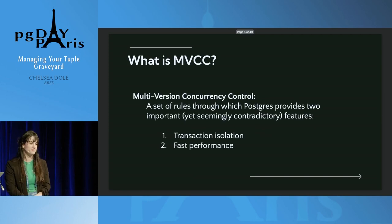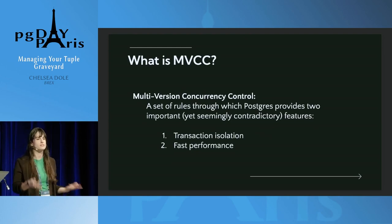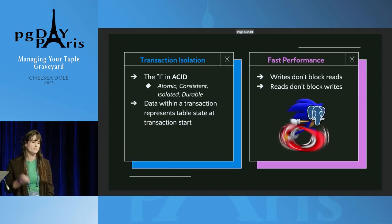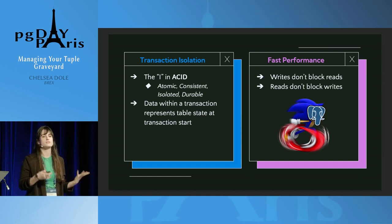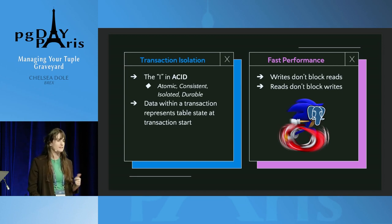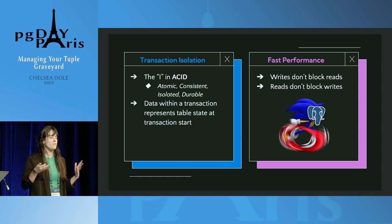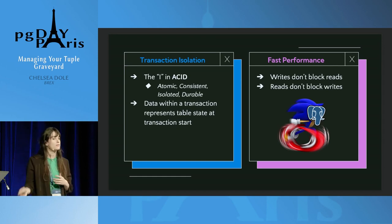Multi-version concurrency control, or MVCC, is basically a set of rules that Postgres uses to provide two seemingly contradictory features that are both very important. The first is transaction isolation, and the second is fast performance for reading and writing. Transaction isolation is the I in ACID — atomic, consistent, isolated, and durable. Data within a transaction basically represents table state at the transaction start time.